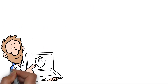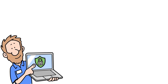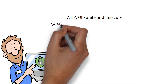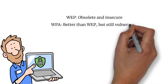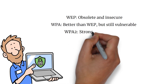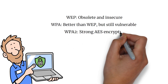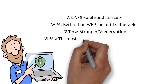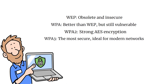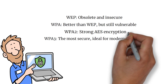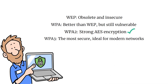Security is essential for any wireless network. Here are the four key protocols: WEP — obsolete and insecure; WPA — better than WEP but still vulnerable; WPA2 — strong AES encryption; and WPA3 — the most secure, ideal for modern networks. For exams and real-world setups, always go with WPA2 or WPA3.